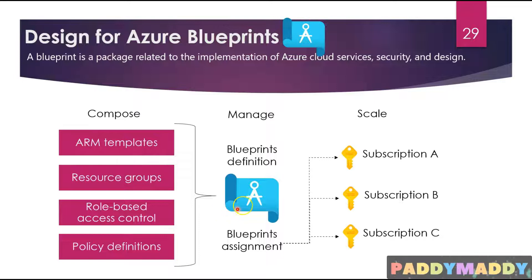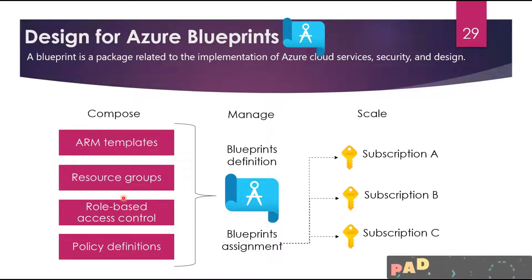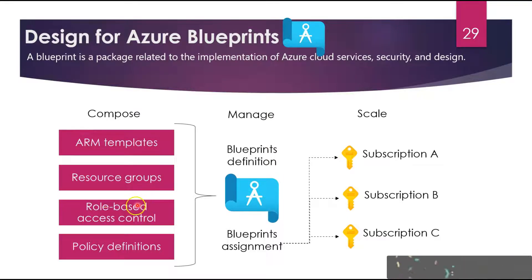Coming back to role-based access management, you can assign this at the subscription or resource group level so that an existing user or group gets a built-in role, making sure that the right people always have the right access to your resources. Role assignments can be defined for the entire subscription or nested to a specific resource — that's where you assign these blueprints included within the blueprint definition.